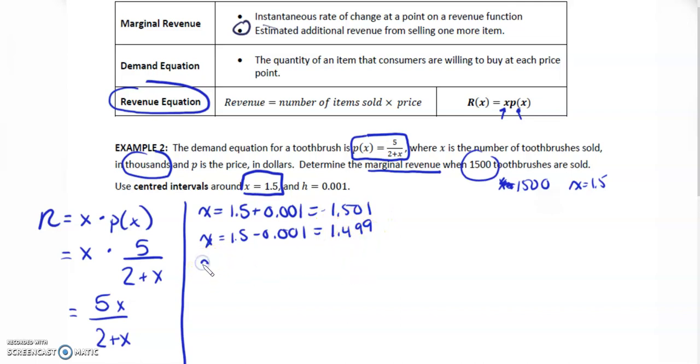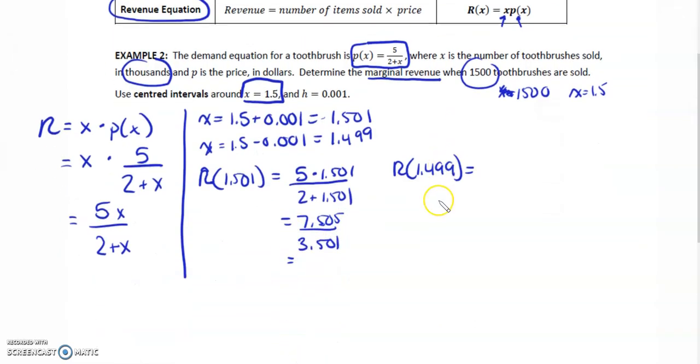We're going to solve for the revenue function at 1.501. So we're going to do 5 times 1.501 over 2 plus 1.501. We get 7.505 over 3.501, and I get 2.14367. Let's round to that many decimals, that's fine.